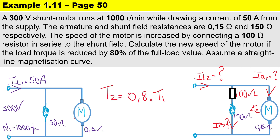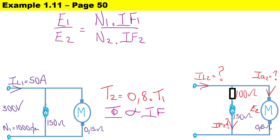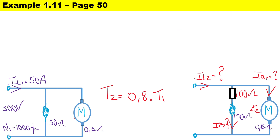The full load torque is reduced by 80%, so T2 is equal to 0.8 times T1. As a reminder, flux is directly proportional to the field current. The equation we are going to use to solve for the increase in speed is: E1 over E2 equals N1 times I_f1 divided by N2 times I_f2. Rearranging to solve for N2: N2 equals E2 times N1 times I_field1 over E1 times I_field2.